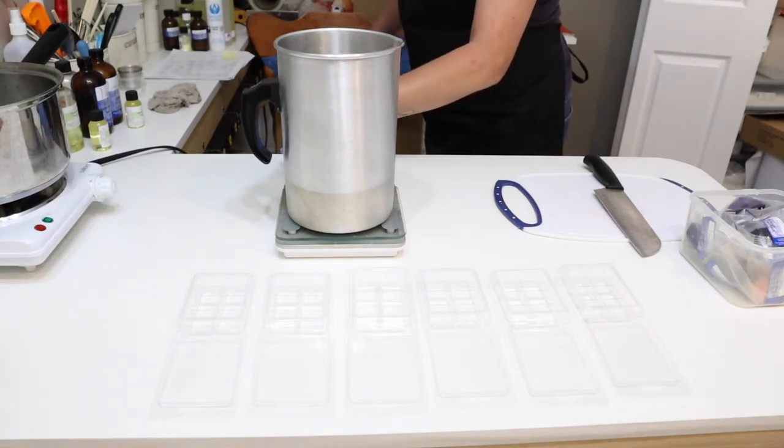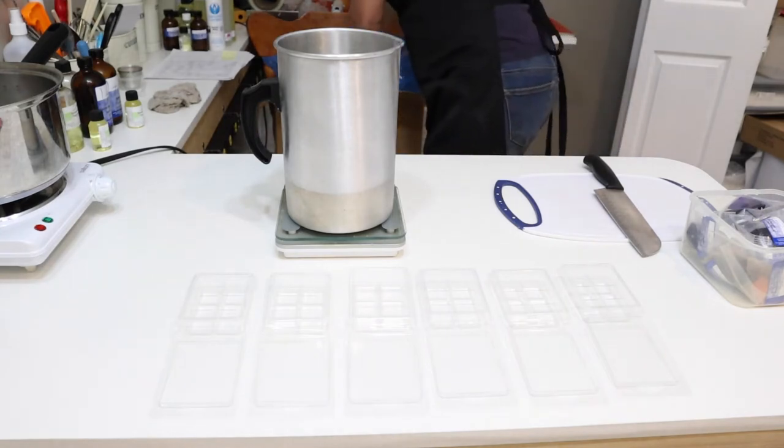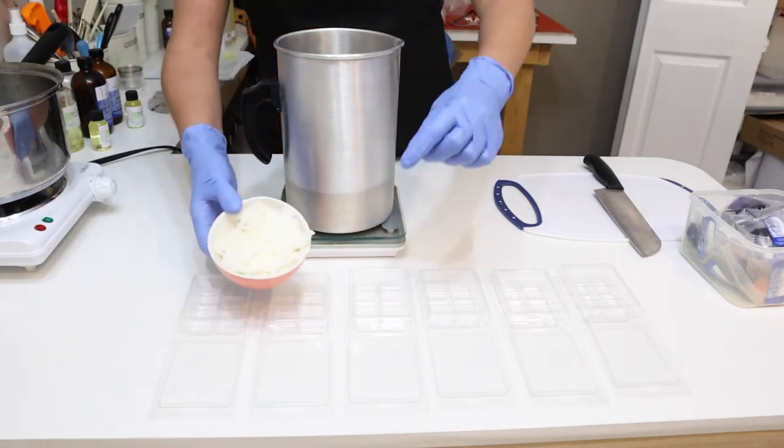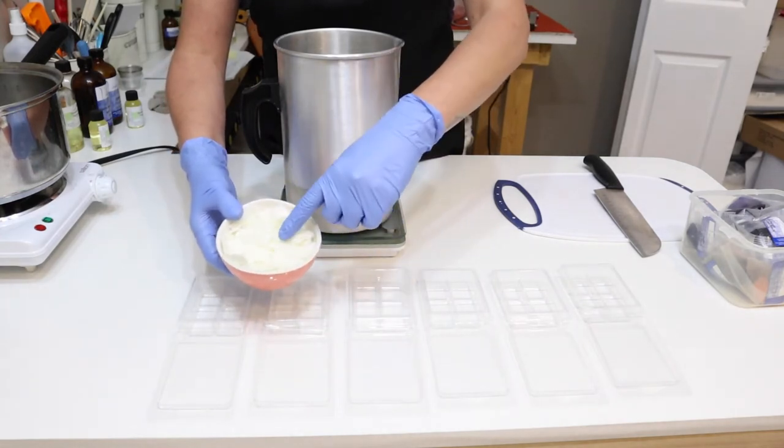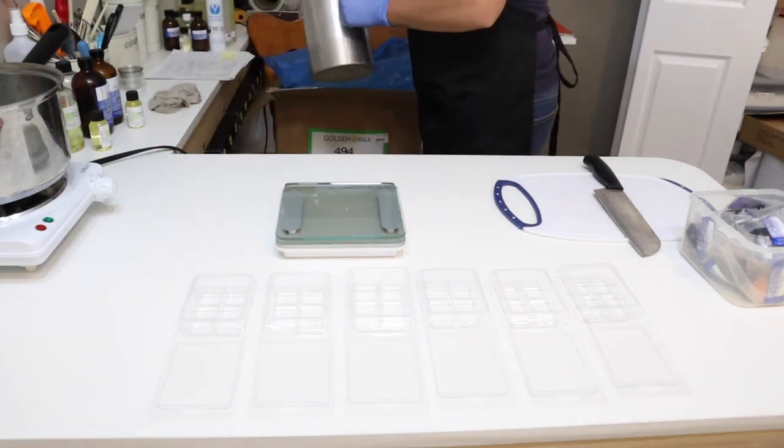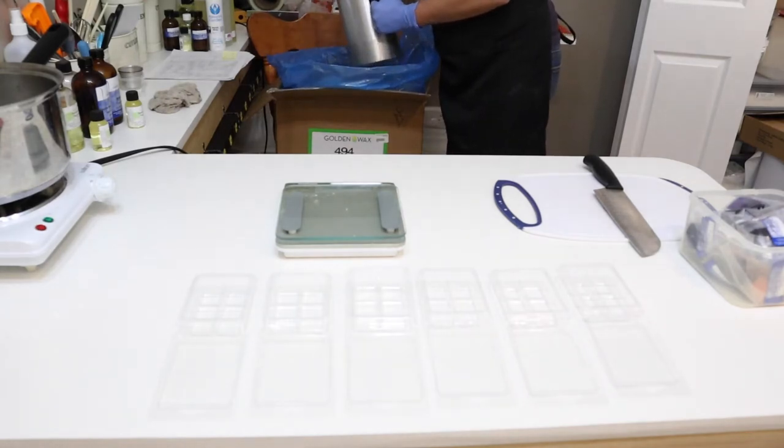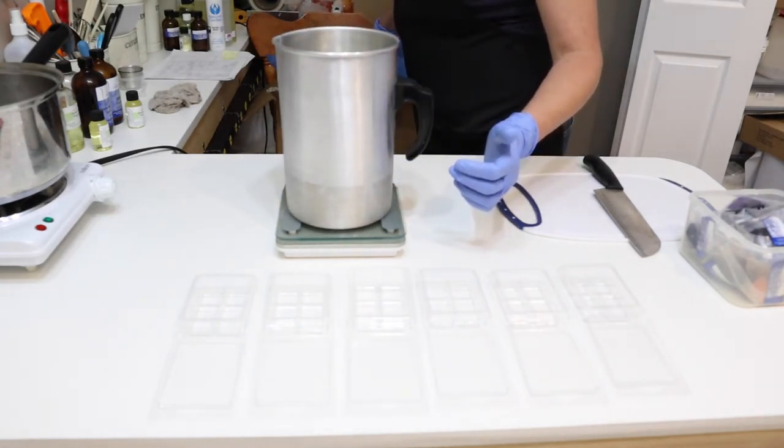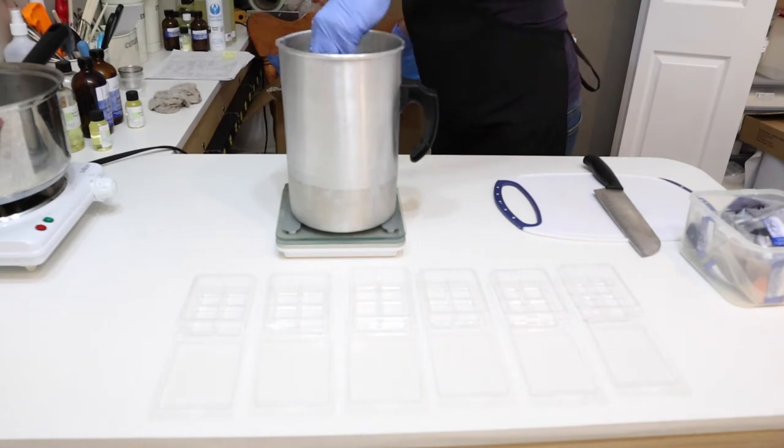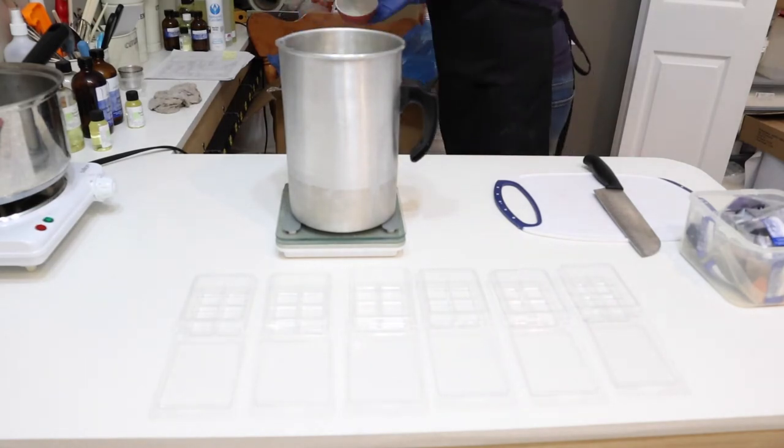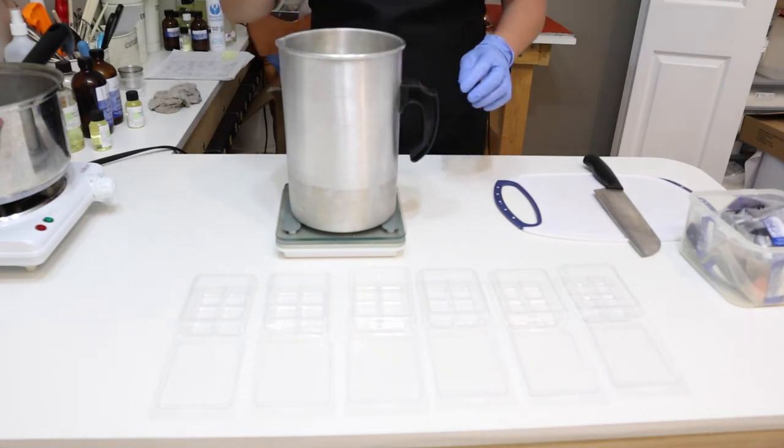Just get my scale going, get it onto ounces. And I'll just use this for a scoop. So just so you can see what it looks like. It just comes in the flake form the way that Golden Wax ships it to us. So just flakes, so it melts down fairly quickly. I'm just going to take this and get some wax in there because I know the approximate amount. All right, so we have one pound of wax in there.